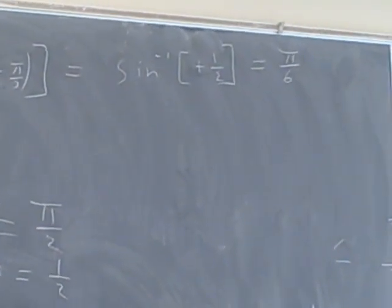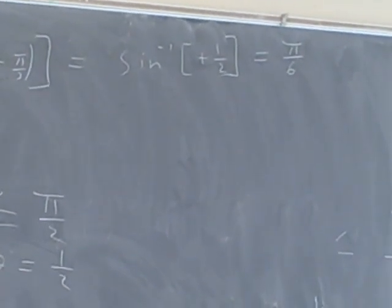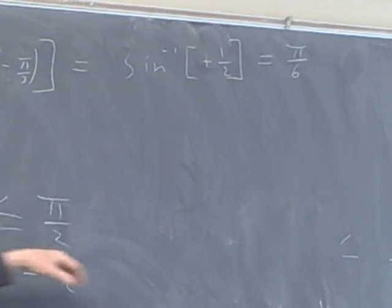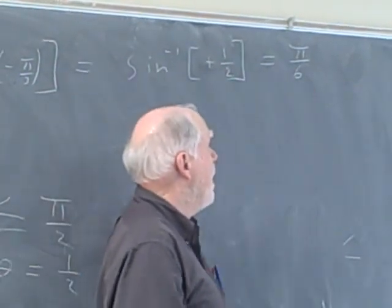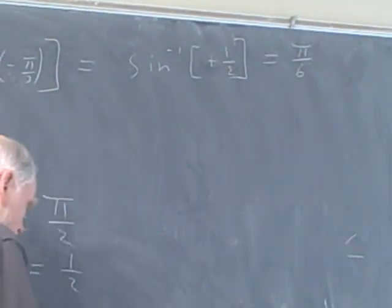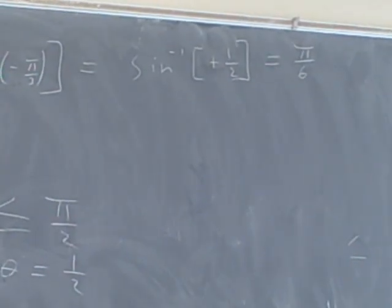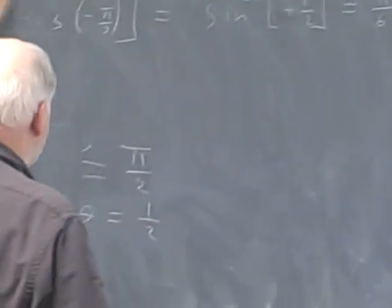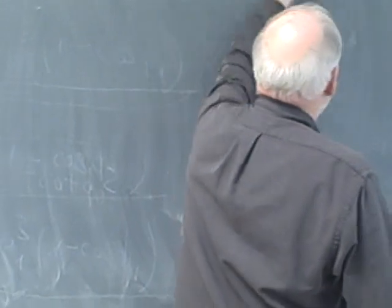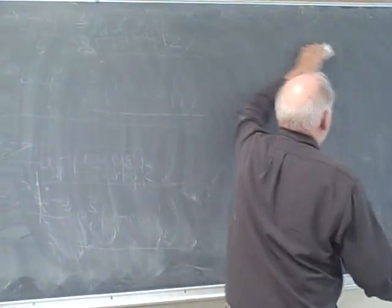We generally use radian measure whenever we evaluate an inverse trig function. So the sine inverse, so essentially the sine inverse of the cosine of negative pi over 3 is positive pi over 6. The next one I'm going to look at is kind of going to be the reverse of this.